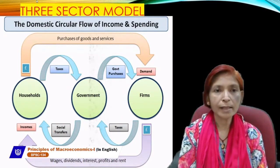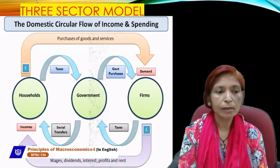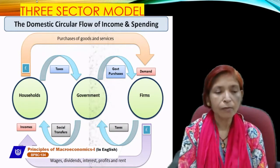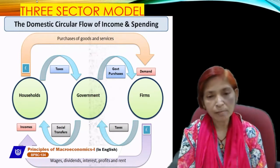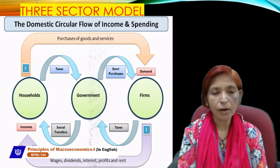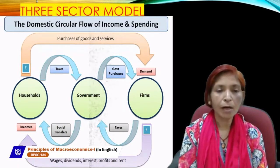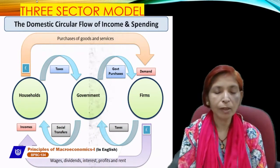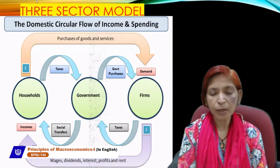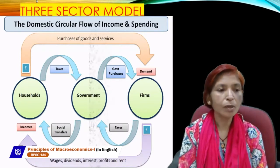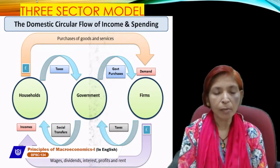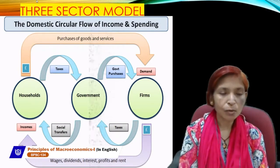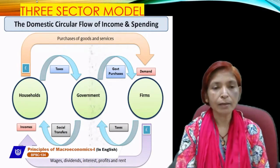In the three-sector model, households provide factors of production to both firm and government sectors. Government imposes direct taxes on households and indirect taxes on firms; firms produce goods and services for households; government provides subsidies to firms and transfer payments to households. This is the three-sector model of the circular flow of income.